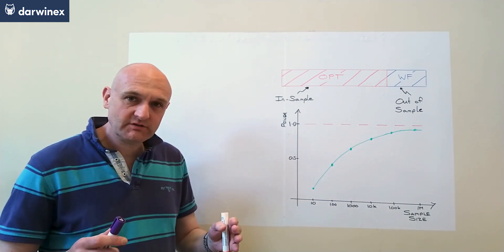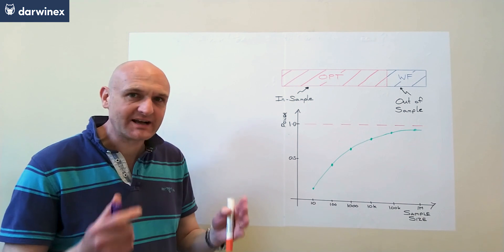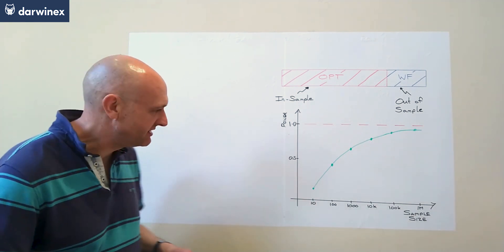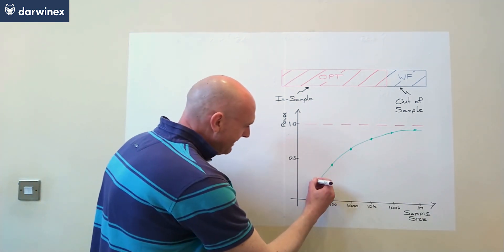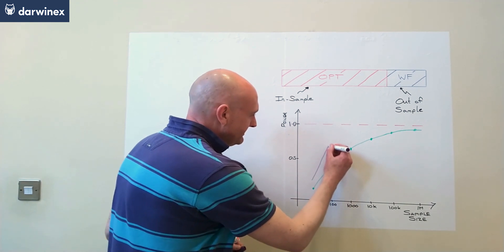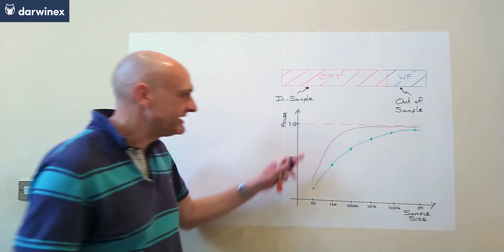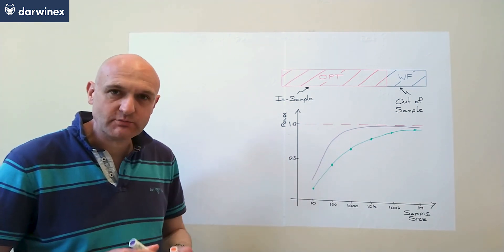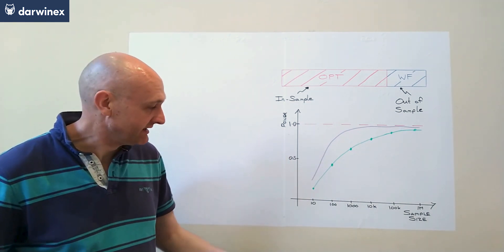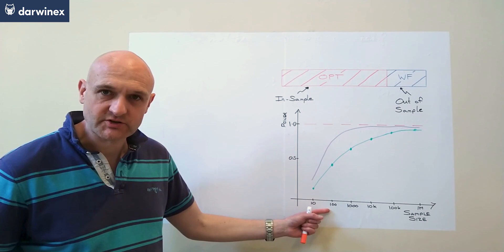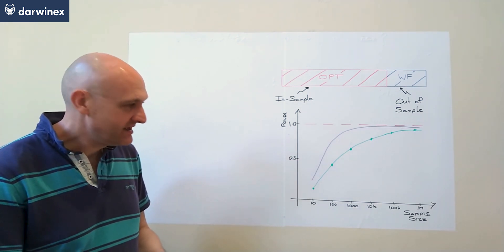Now for systems that you've developed that have an excellent edge, a very strong edge, what will happen is that this line will reach that high probability much more quickly and much more easily with low sample sizes.